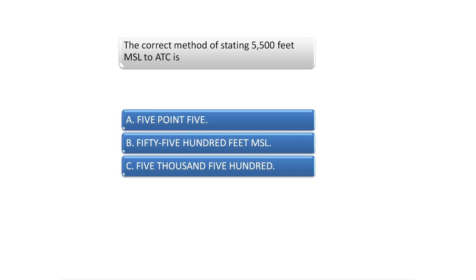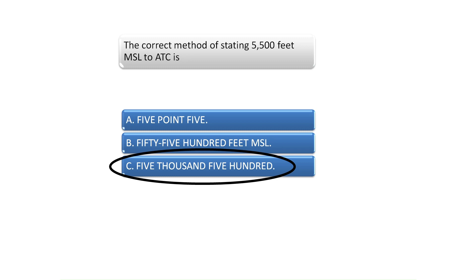The correct method of stating 5,500 feet MSL to ATC is 'five thousand five hundred.' 5 is typically pronounced 'fife' and 3 is pronounced 'tree.' For this question, the best answer is C. See Chapter 4 of the AIM for further study material on recommended communication procedures with ATC.